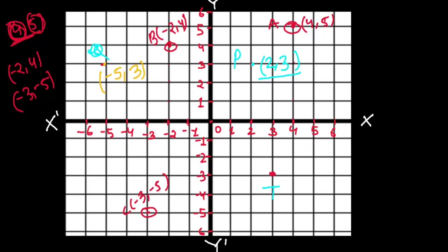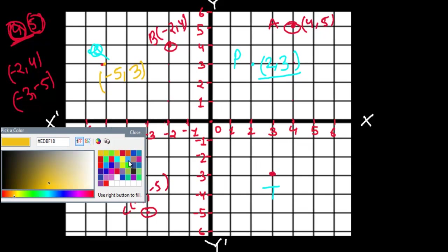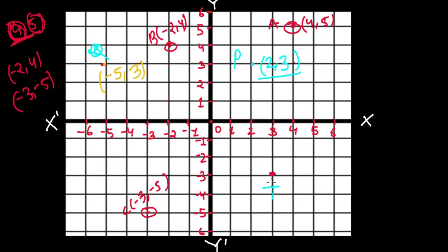For point T: along the x-axis it is three, and along the y-axis it is negative three, so point T is at (3, −3). This is how we locate a particular point in the coordinate or Cartesian plane. In the next video, we'll be learning more deeply about this chapter — how to locate the positions of different objects. See you in the next video, bye!